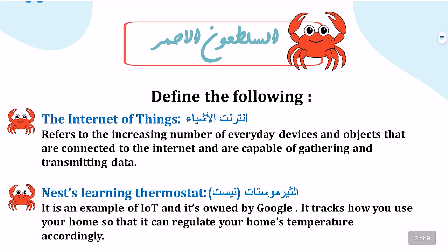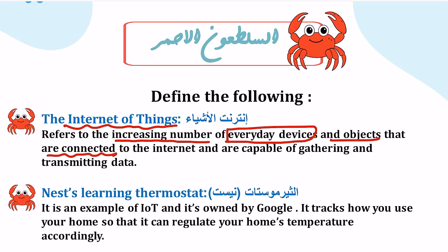كالعادة مجموعة من التعريفات الجميلة. أول تعريف يواجهنا: ما هو تعريف إنترنت الأشياء؟ هو يشير إلى الزيادة في الأجهزة المنتشرة حوالينا والعناصر التي تكون متصلة بالإنترنت وتكون قادرة على جمع البيانات ونقل هذه البيانات. باختصار، إنترنت الأشياء هو كل الأجهزة التي تتصل بعالم الإنترنت.